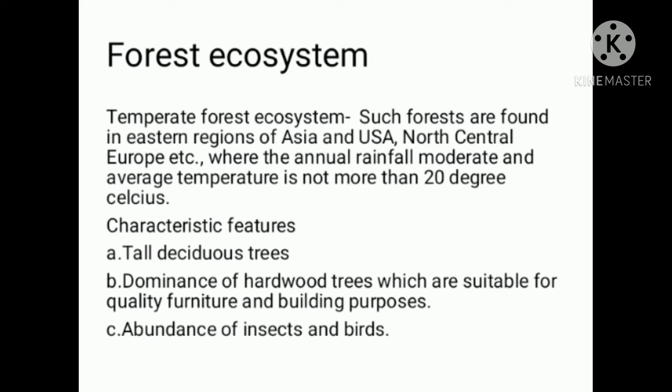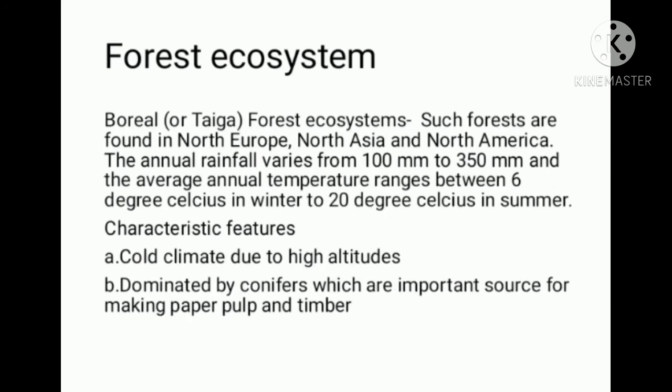Abundance of insects and birds. Boreal or Taiga forests are found in North Europe, North Asia, and North America. The annual rainfall varies from 100 mm to 350 mm and the average annual temperature varies between 6 degrees Celsius in winter and 20 degrees Celsius in summer.